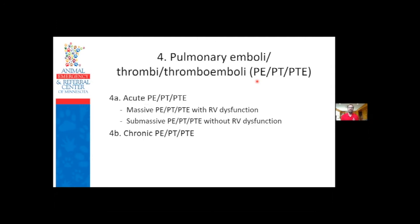Class 4 is PTEs or clots going to the lungs - anything from chronic small micro-clots over time slowly blocking more arterioles until pressures rise, to an acute massive pulmonary thromboembolism where a clot from the venous system breaks loose, goes through the right heart, and blocks a large pulmonary artery branch. That sudden blocking can cause acute onset dyspnea or tachypnea, and the acute pressure load on the right ventricle can sometimes cause acute right ventricular dysfunction.